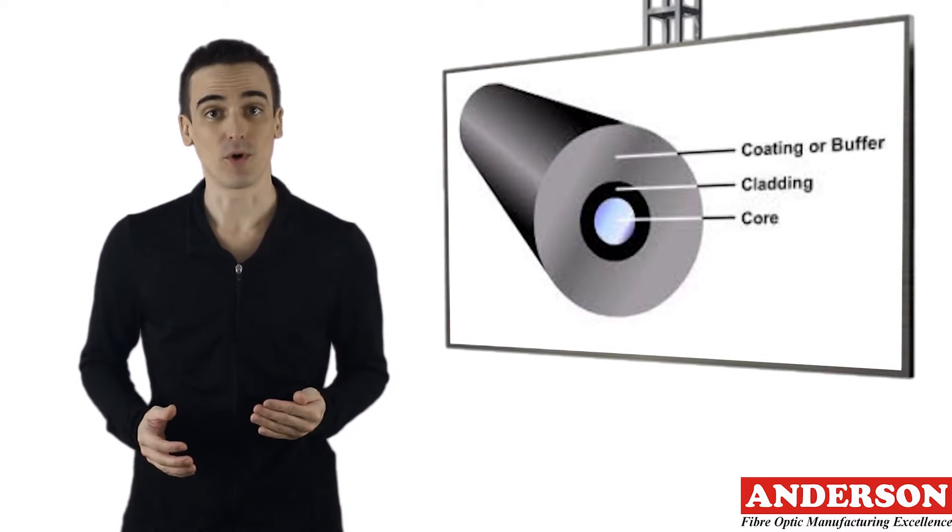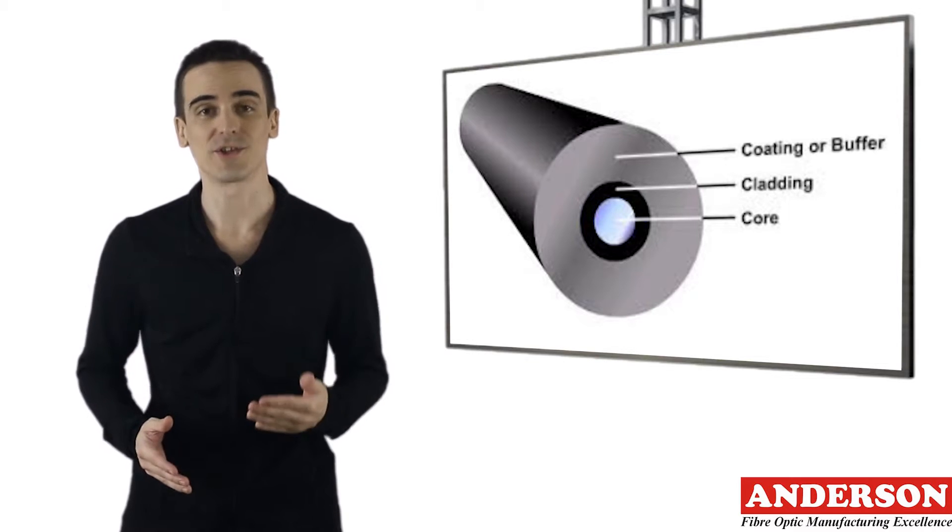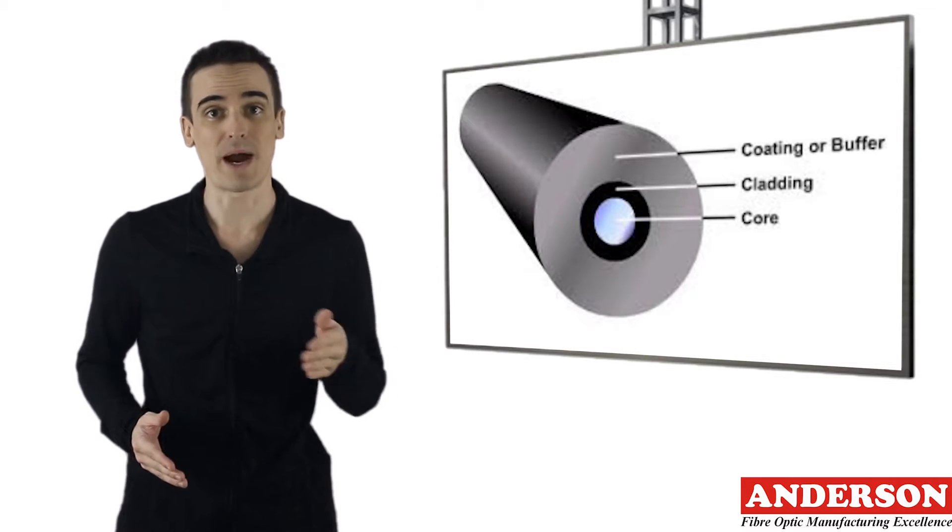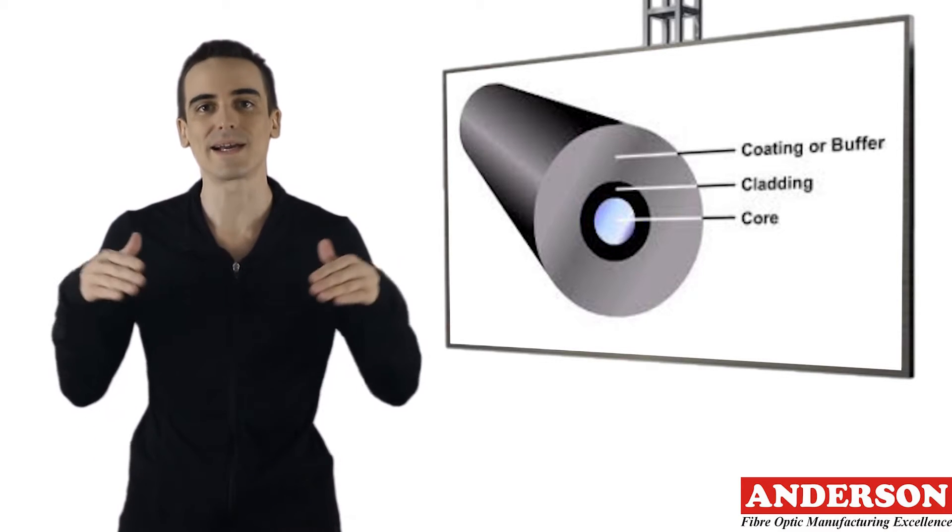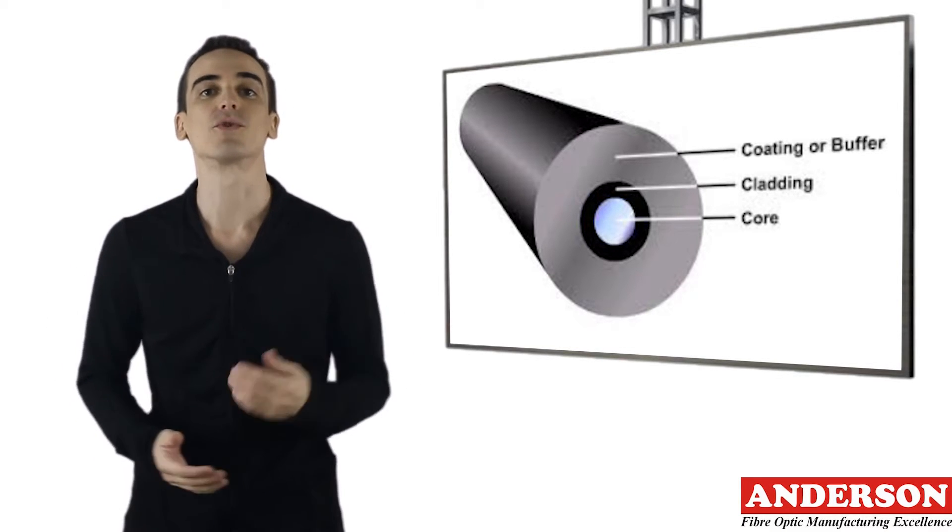The refractive index of the core is higher than that of the cladding, so light in the core that strikes the boundary with the cladding at an angle shallower than the critical angle will be reflected back into the core by total internal reflection.